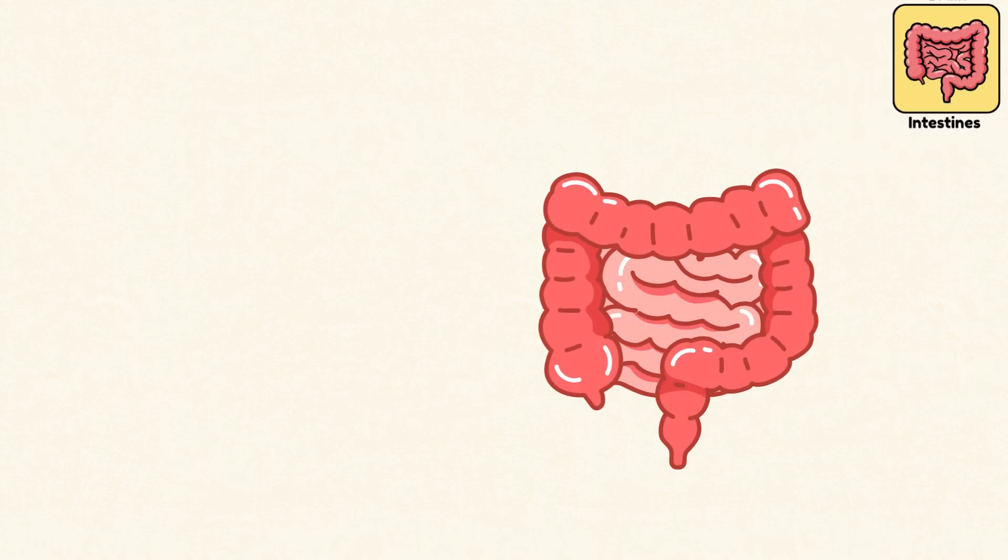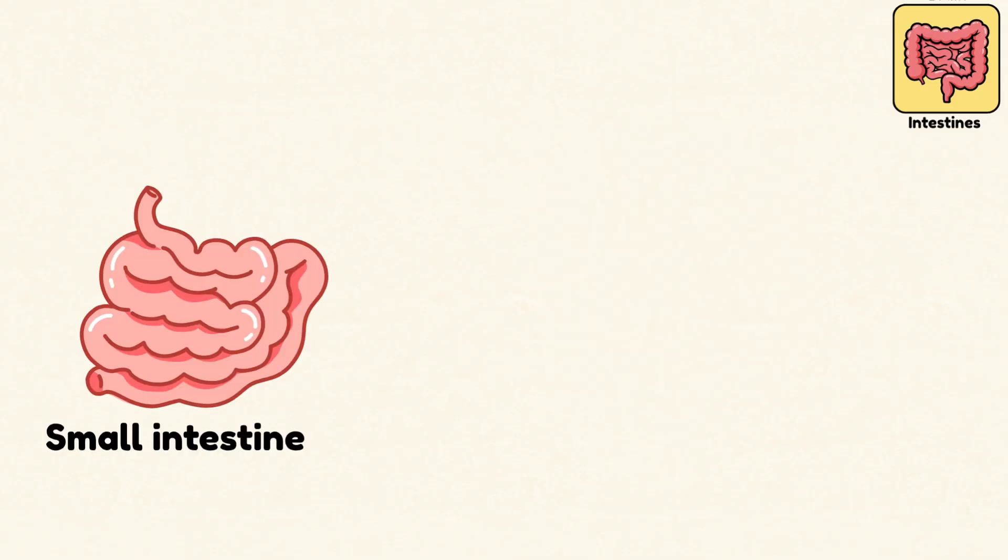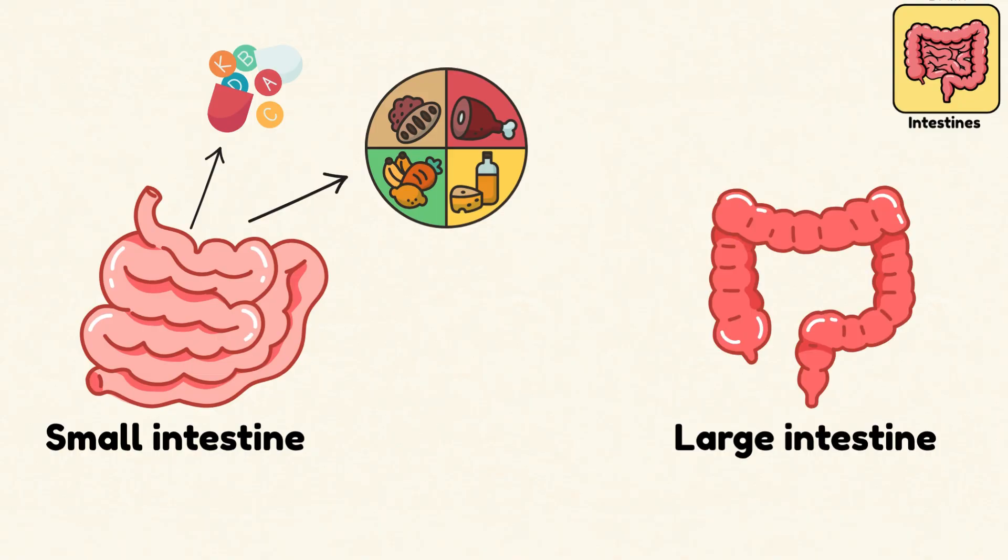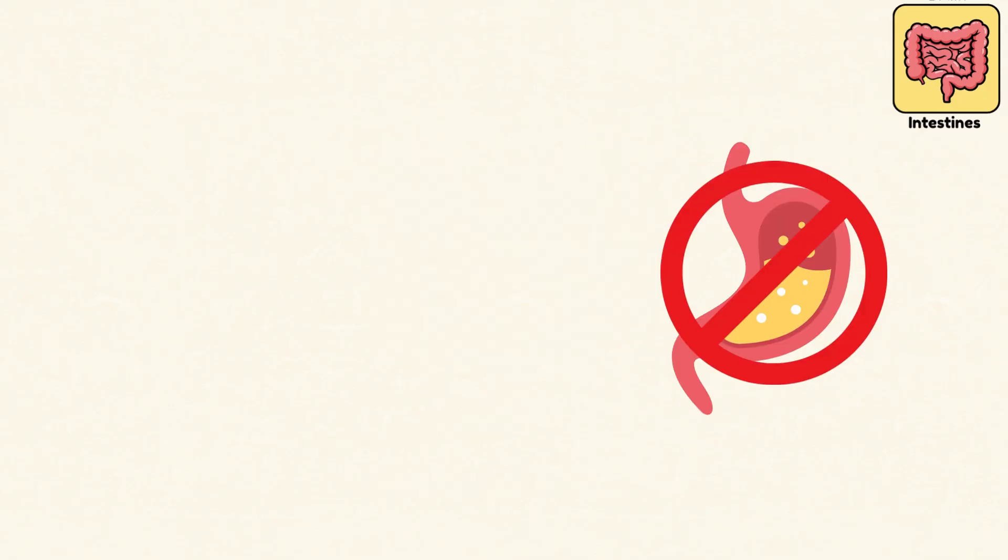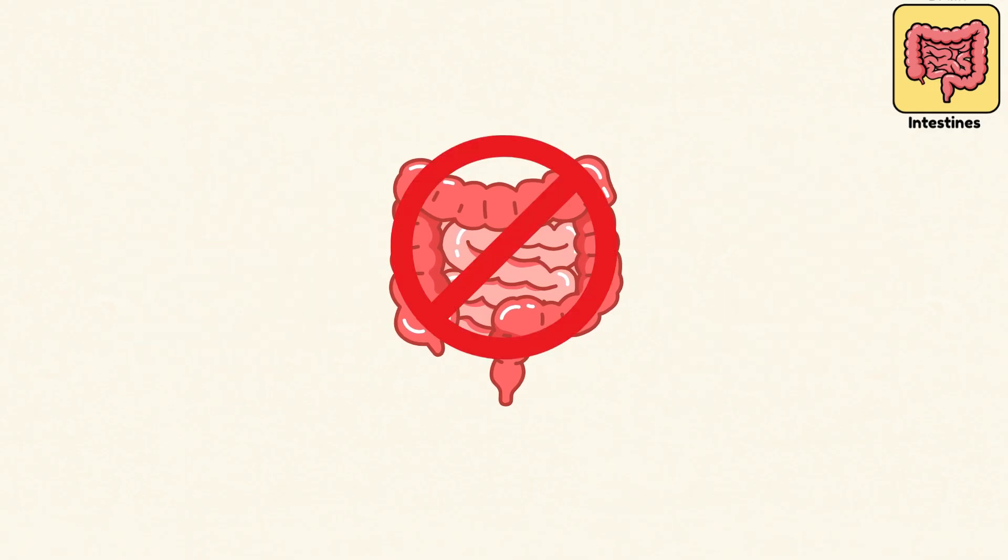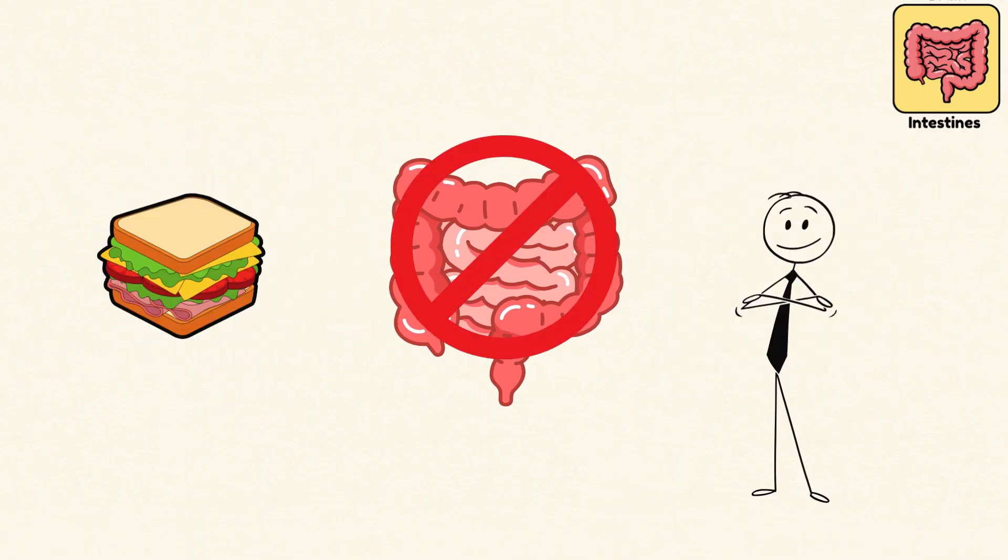Intestines. The intestines are your nutrient pipeline, stretching over 25 feet inside your body. The small intestine absorbs nutrients from food. The large intestine reclaims water and packs waste into feces. Once the job's done, what's left travels through the rectum and out the anus. Most digestion doesn't happen in the stomach, it happens here. Without intestines, your body simply can't absorb life's fuel.